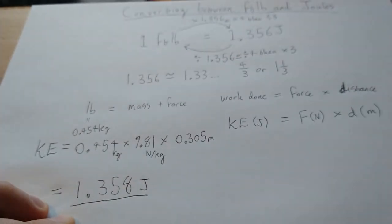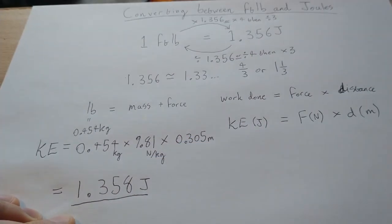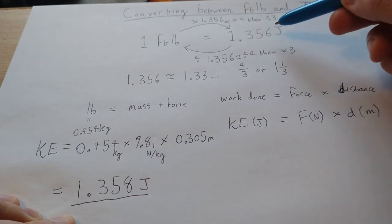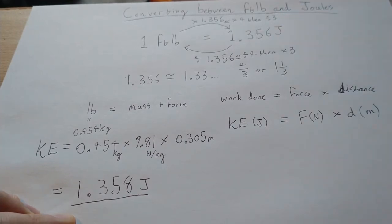And that's how we know that one foot pound is in fact 1.358, or up here 1.356 depending on rounding, joules.